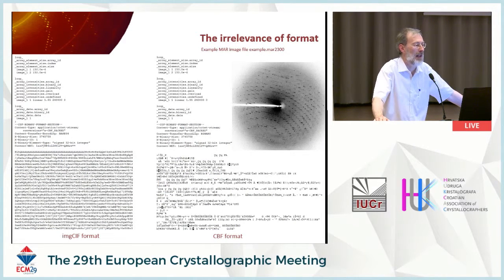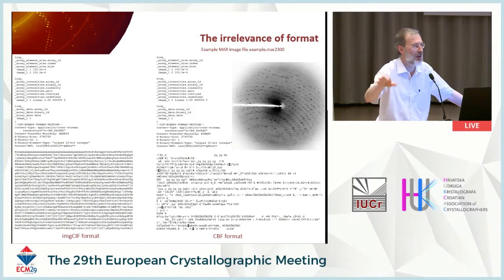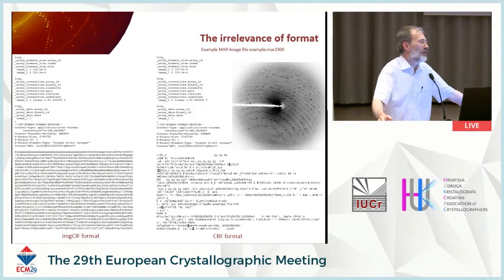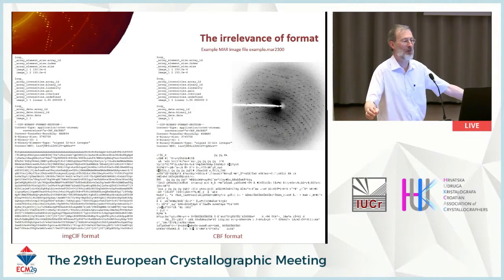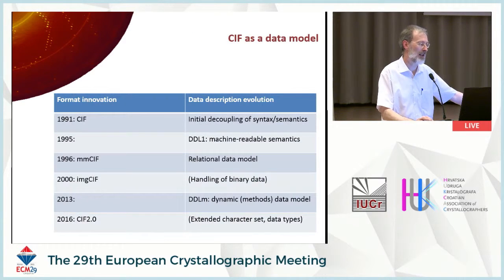This is just another example. On the left is an imgCIF. On the right is what you might get if you try to look at a CBF on screen — all the garbage at the bottom is the binary form of the image. And whichever format or encoding you provide, you can still see the same raw data in an appropriate visualization tool.